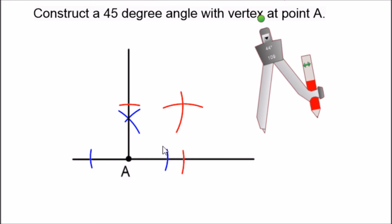Now the last thing we need to do is connect point A to this intersection of the red arcs, and if we label everything, let's say we call this point C and we call this point down here point B, then we just constructed angle CAB and the measure of angle CAB is 45 degrees.